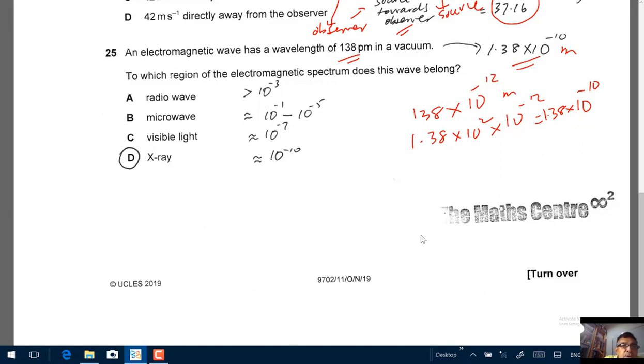I'll just take you through the responses. Those of you who know your EM spectrum well, you know the answer straight away is D, x-rays. A radio wave, I've given you typical wavelengths. Radio wave is bigger than 10 to the power of minus 3 meter. Microwave, 10 to the power of minus 1 to 10 to the power of minus 5 meter. Visible light, about 10 to the power of minus 7 meter. And x-ray, about 10 to the power of minus 10 meter. So correct response will be D, x-ray.